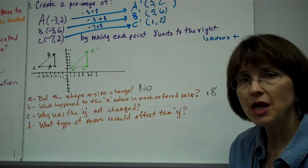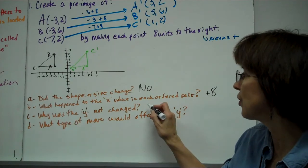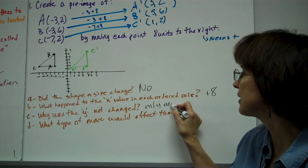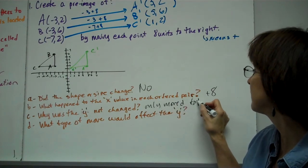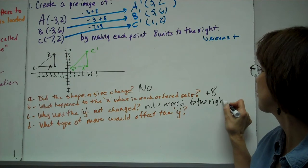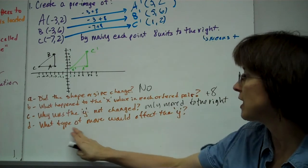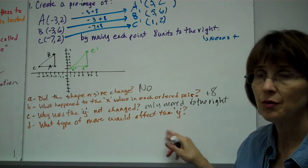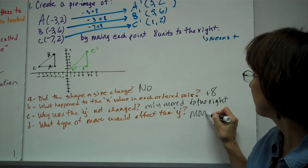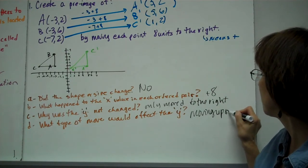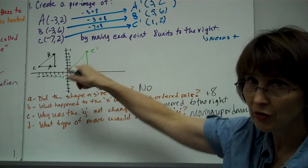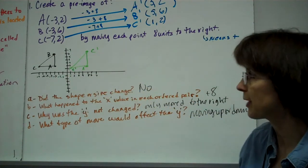Why was the y not changed? Well, because we didn't move. If we only moved across, only moved to the right. We only moved it across. Now what type of move would affect the y? Moving up or down, because the y axis is the vertical axis, and that's the up or down part.